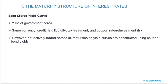Quick review: the spot zero yield curve represents the yield to maturity of government zeros, with bonds sharing the same currency, credit risk, liquidity, tax treatment, and coupon reinvestment risk — there is no reinvestment risk because they are zeros. However, zeros are not actively traded across all maturities, so yield curves are constructed using coupon bond yields.